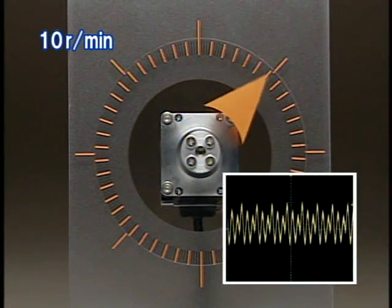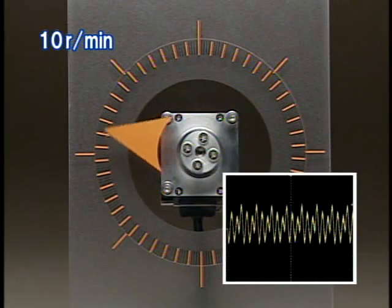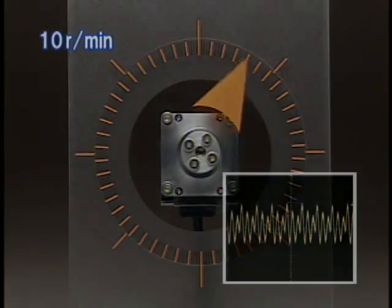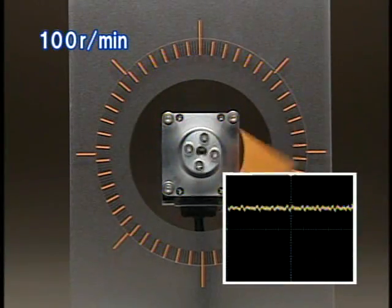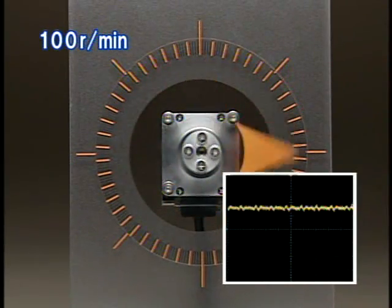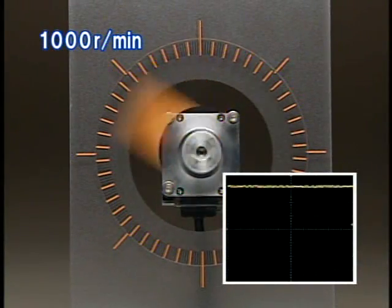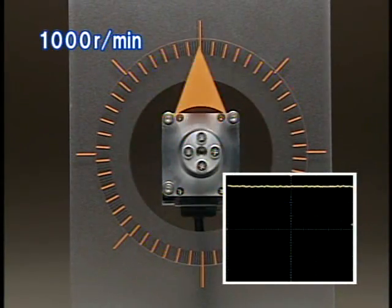At 10 revolutions per minute, overshootings and undershootings occur continuously. At 100 revolutions per minute, you hardly notice the overshootings and undershootings. At 1000 revolutions per minute, there are almost no overshootings and undershootings.